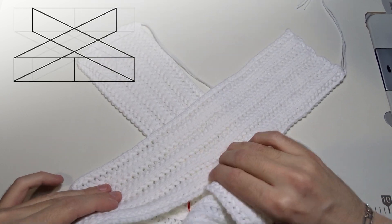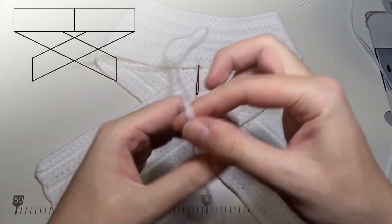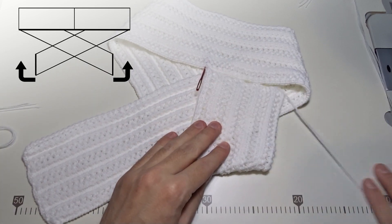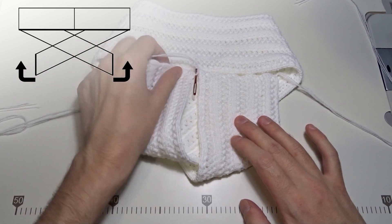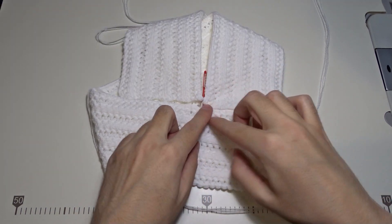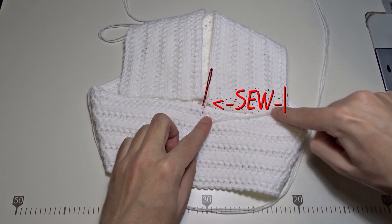Fold both ends of the strip once again. Now you have to sew the turban as shown in the video.